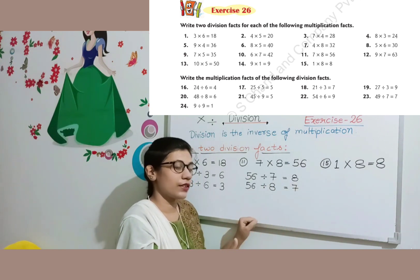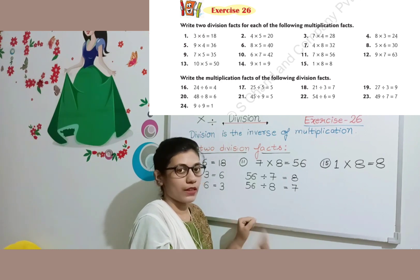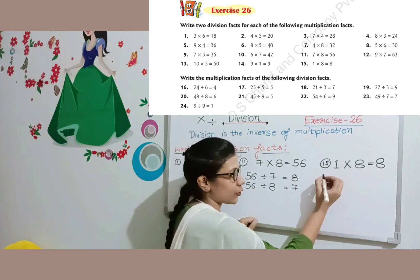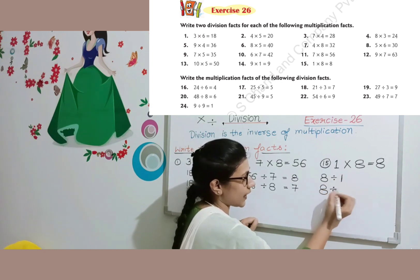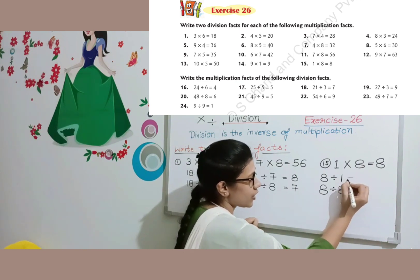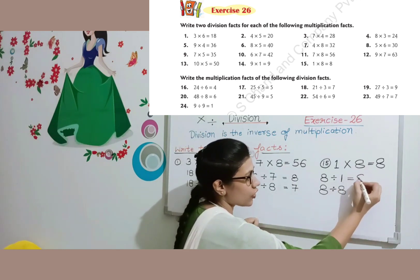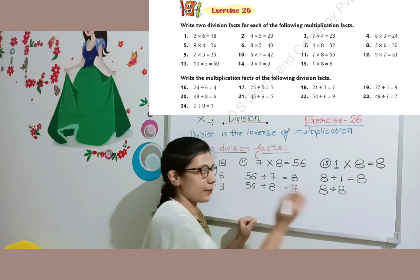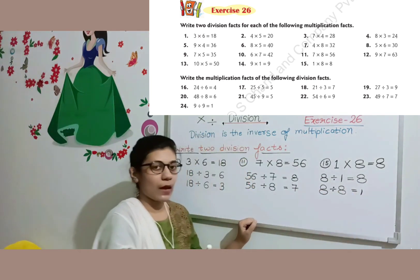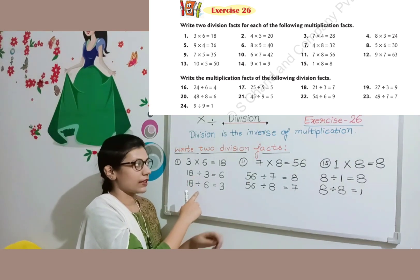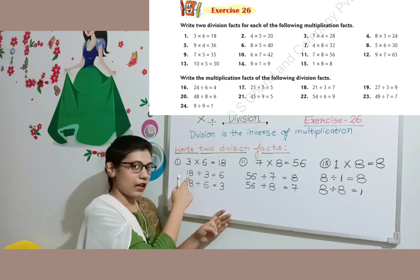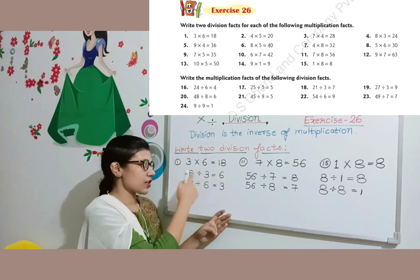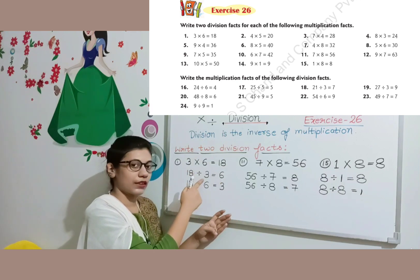Another example: 1 multiplied by 8 is equal to 8. The biggest number is 8, so you divide 8. First division fact: 8 divided by 1 equals 8. Second division fact: 8 divided by 8 equals 1. When you divide by 1 you get the number itself, and when you divide by 8 you get 1. To summarize: what you divide is the dividend, what you divide by is the divisor, and the answer is the quotient.